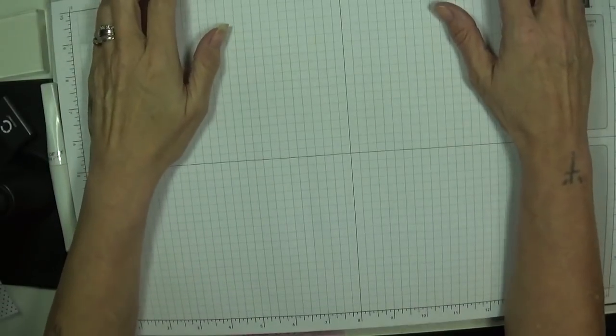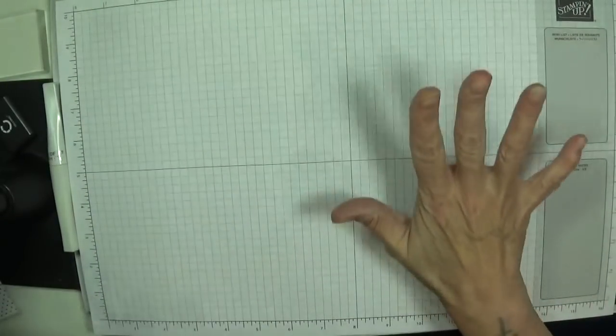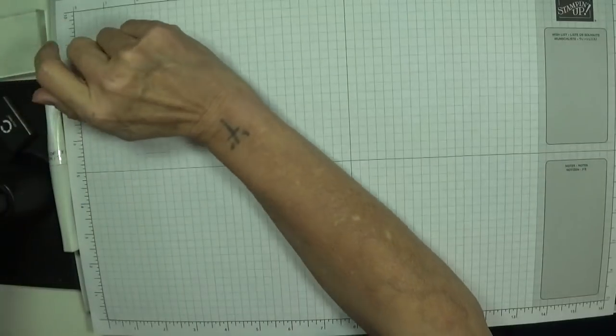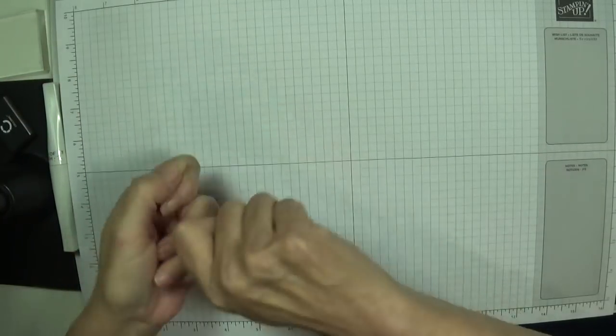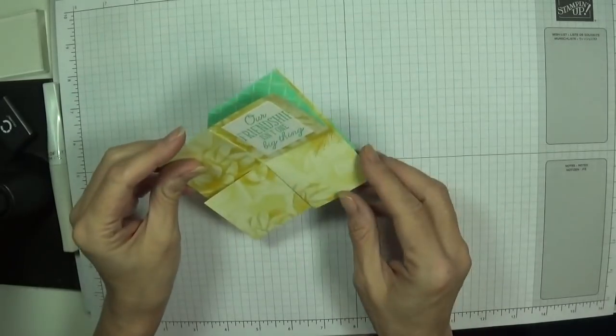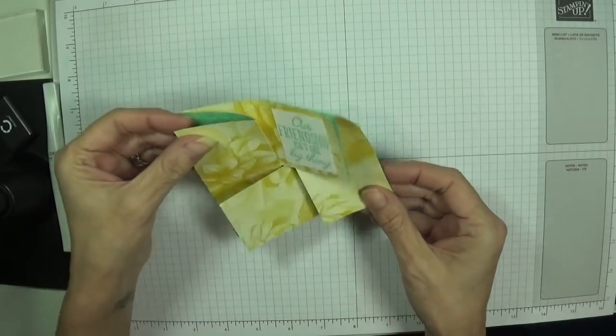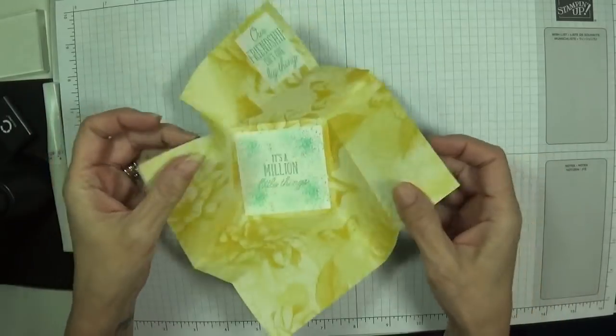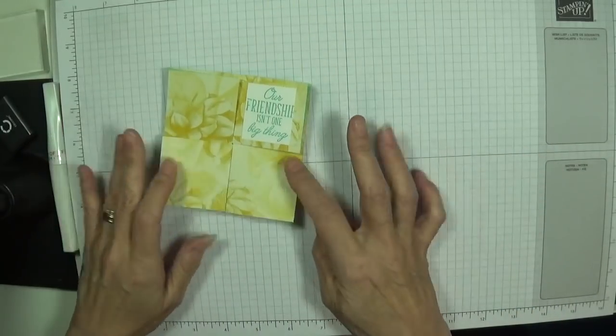Hey Stampers, Gailer again. I'm coming back with a card called a twist and pop, and it's not the one we did the other night. It's this one. This is the card. How sweet is that? And it just folds back in on itself.